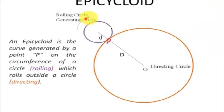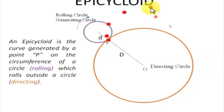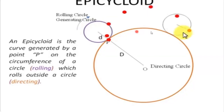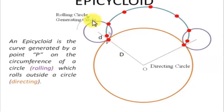The rolling circle will be generating a path, that's why it's also called the generating circle. Here, a point P on the smaller circle traces a path as it rolls over the bigger circle. The point moves on the circumference so that we get a path above the bigger circle. Once the smaller circle rolls over the directing circle for one revolution of 360 degrees, we will have generated the full path — that's the curve we are going to trace.